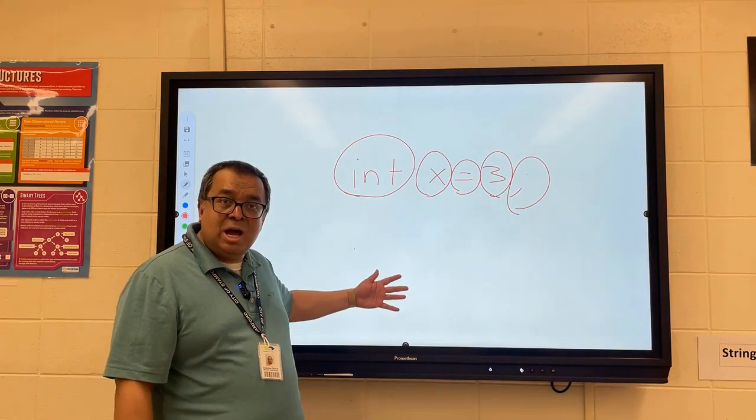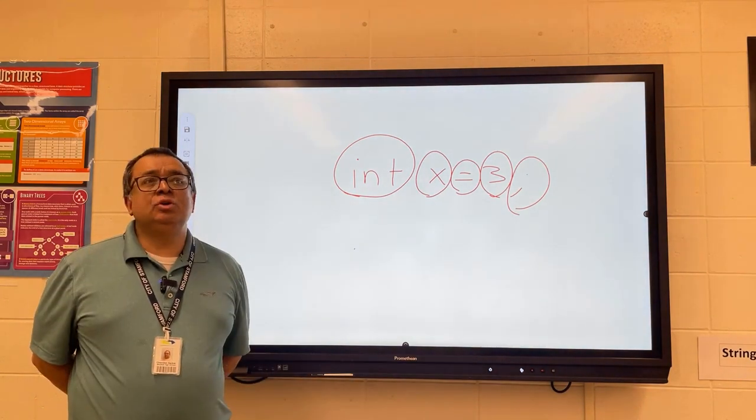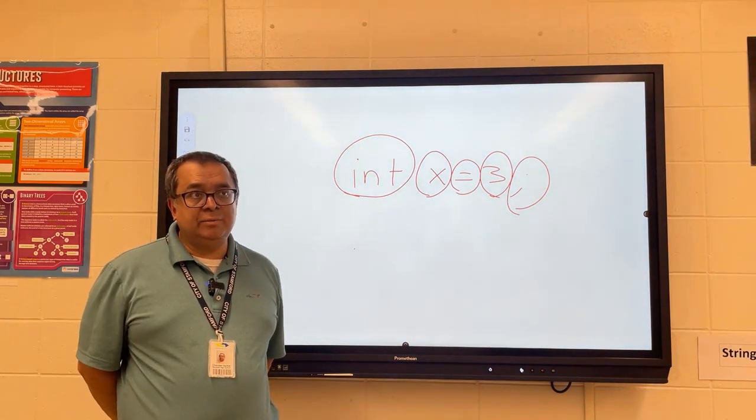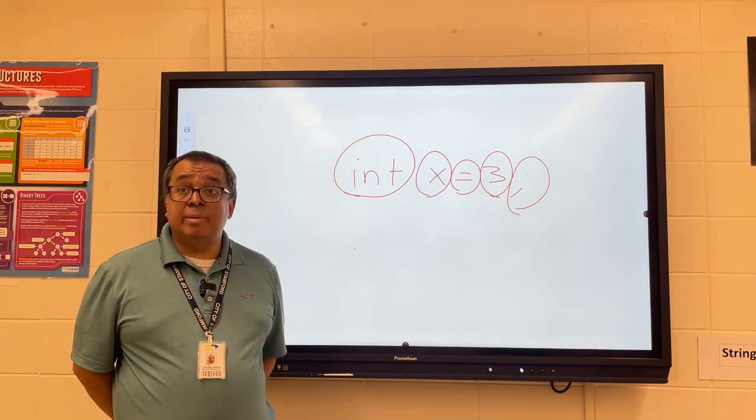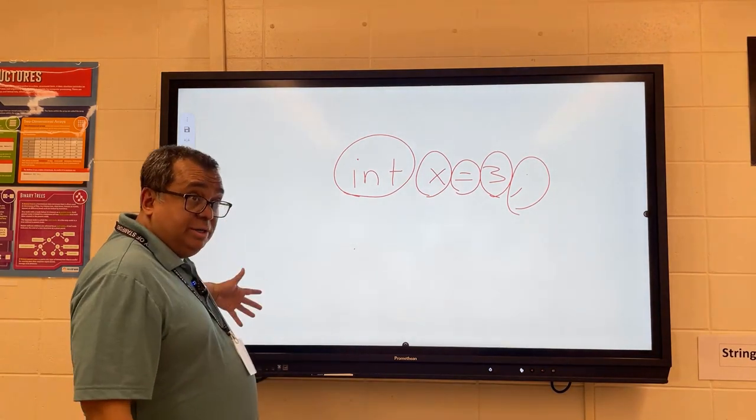Mila suggested one of them earlier today. Bisection search. So we could sort the list of words and then when we go to search for them we could do a bisection search. What's the other data structure that we could use instead of sorting them? What else could we store them in?